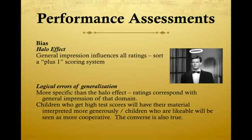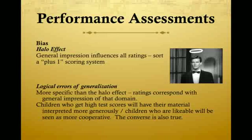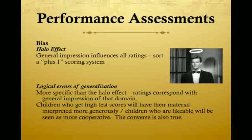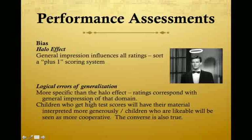Another type of bias is the halo effect, where a person with a certain quality just gets all the lucky breaks, everyone likes them, everyone cuts them extra slack, and they have their own set of criteria across everything. On the other hand, there's the more specific logical error of generalization — for example, if you are a really good math student and you turn in a half-effort job, the teacher gives you the benefit of the doubt and assumes you know what you're doing and gives you an A anyway. Whereas if a typically poor student turned in that exact same work, they might get the F. The distinction is that the halo effect is general across everything, while logical errors of generalization are really content specific.